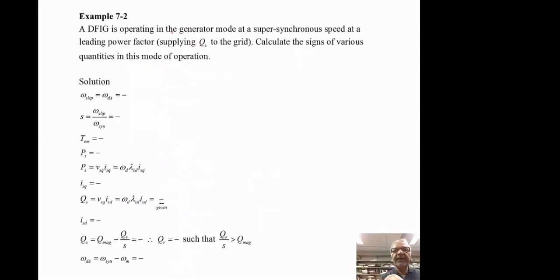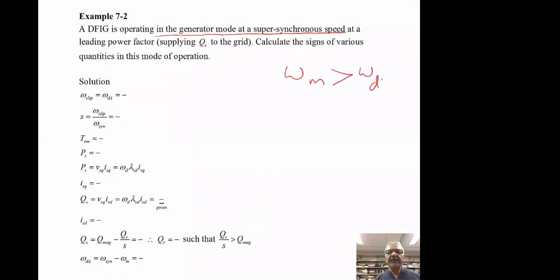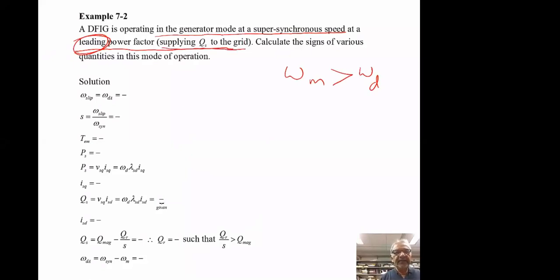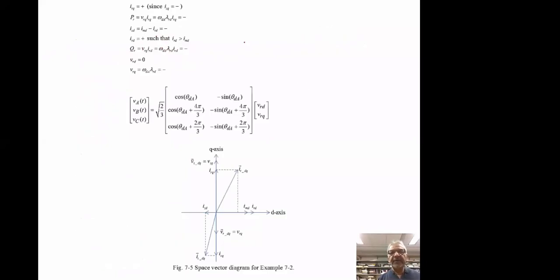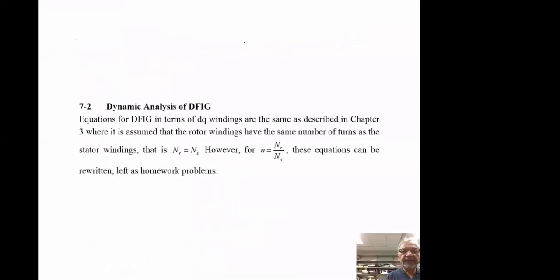In the second example, the DFIG operates in generator mode at super-synchronous speed, where ω_m in electrical radians per second is greater than ω_d. It operates at leading power factor, meaning it's supplying reactive power to the grid. Going through the same arguments yields all the signs, which result in the corresponding space vector diagrams.